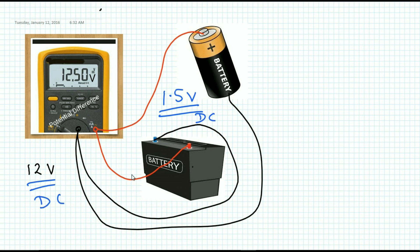This is called DC, DC means direct current. So this is the potential difference across the battery, that means 12 volt and 1.5 volt is the potential difference across this battery.